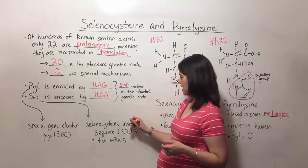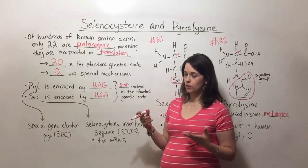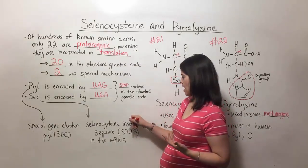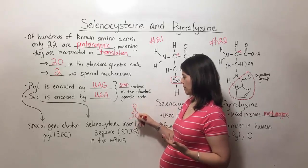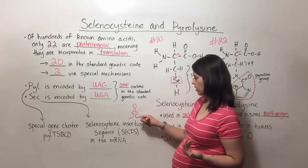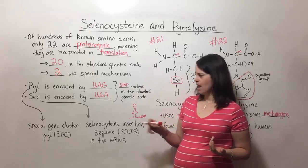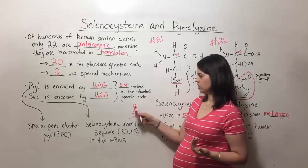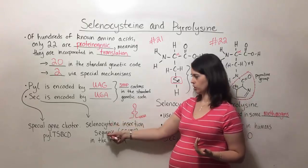And so basically what that looks like is you've got about 60 nucleotides in the mRNA and they form a sort of special stem, what's called a stem loop structure right before that UGA codon.